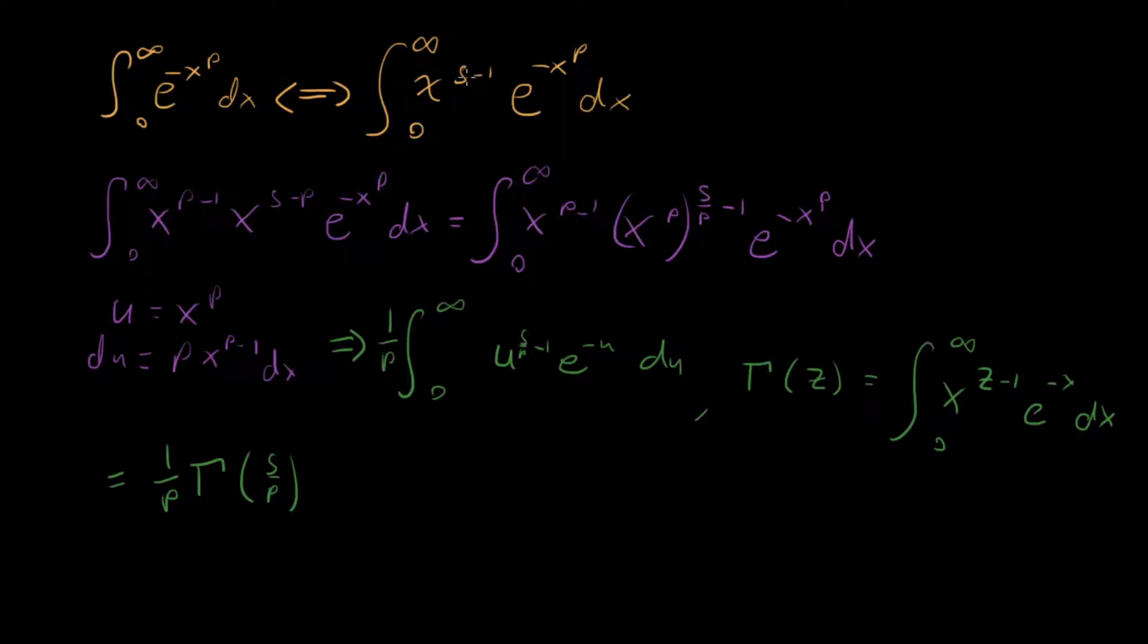This is a more general thing. We can vary s here such that we get x times e to the minus xp, x squared times e to the minus x to the p, x to the n times e to the minus x to the p. So this right here is the key result right here.